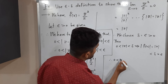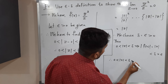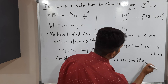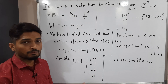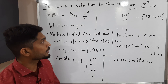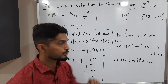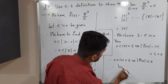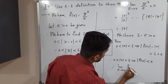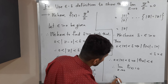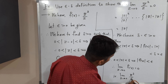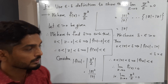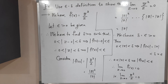Therefore, 0 less than |z| less than delta implies |f(z)| less than epsilon. This condition is satisfied, so the definition is satisfied. Therefore, the limit of f(z) — which is z-bar squared upon z — equals 0. In this way we proved this using the epsilon-delta definition of limit. Thank you, see you.